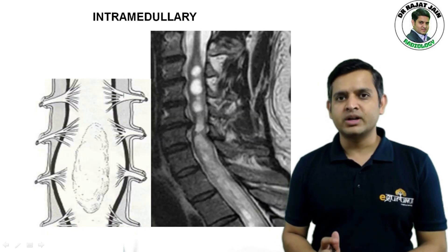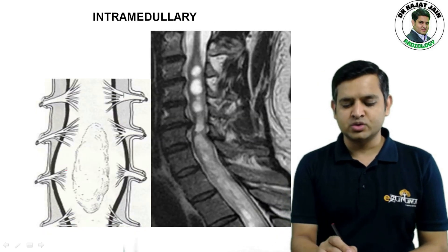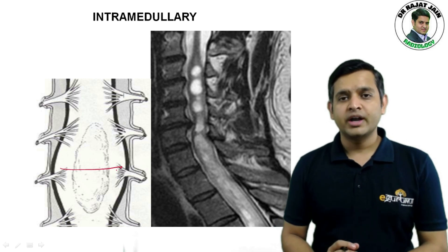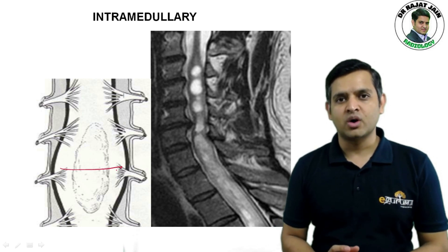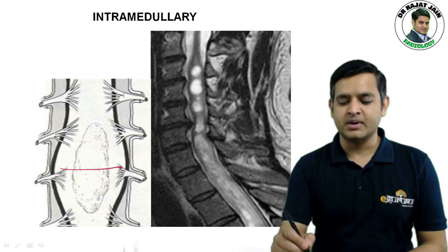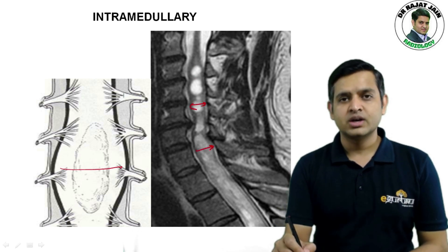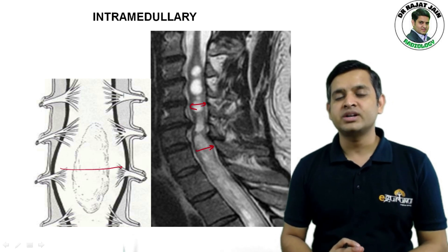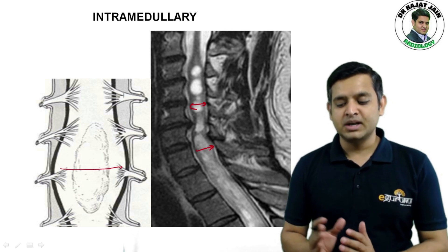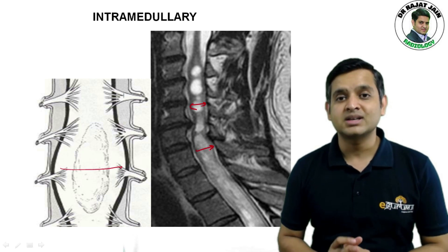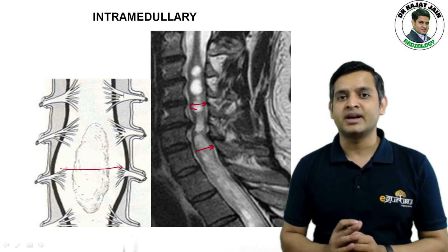If you see an intramedullary mass, it will cause expansion of the spinal cord. As you can see on this T2 weighted MRI, there is an expansion of the cord, which is an important sign of an intramedullary mass. Please note that the subarachnoid space is also attenuated in this case.